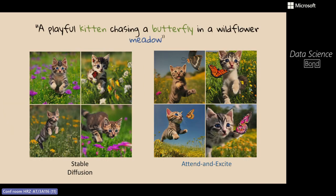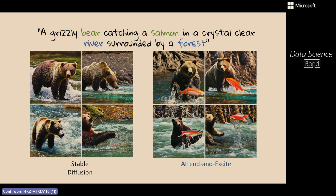Here's an example with a complex prompt: 'a playful kitten chasing a butterfly in a wildflower meadow.' Stable Diffusion failed to generate the butterfly in the original images. Attend and Excite fixes this issue. The generated images also fit the prompt nicely — the kitten seems to be chasing the butterfly, especially in these examples that are part of our paper's teaser. Another complex example: 'a grizzly bear catching a salmon in a crystal clear river surrounded by a forest' — no salmon in the original Stable Diffusion outputs, but Attend and Excite generates images where the bear seems to chase the salmon in the river.